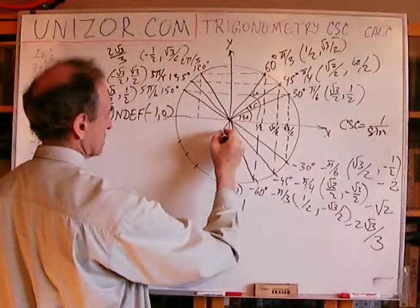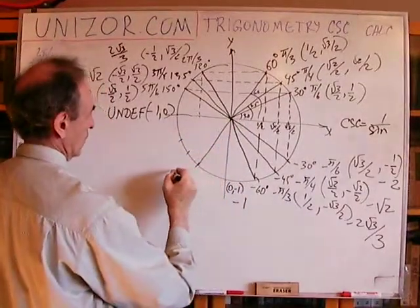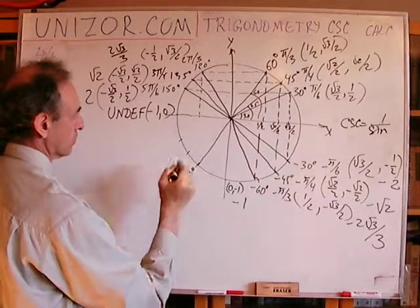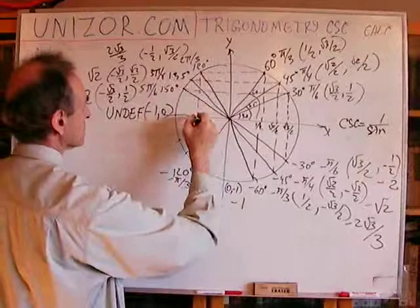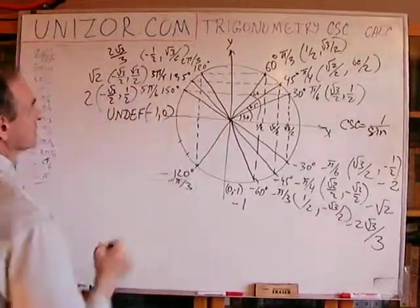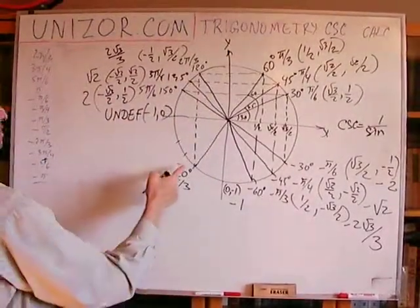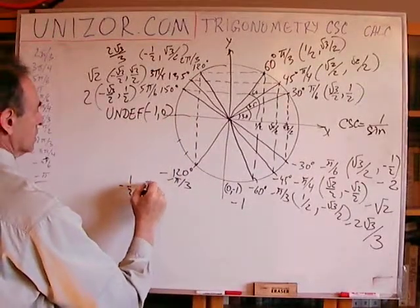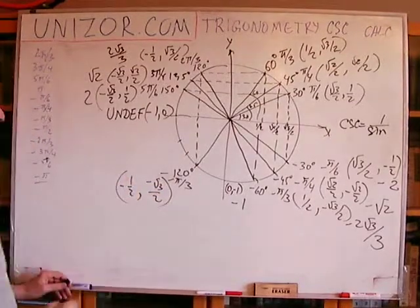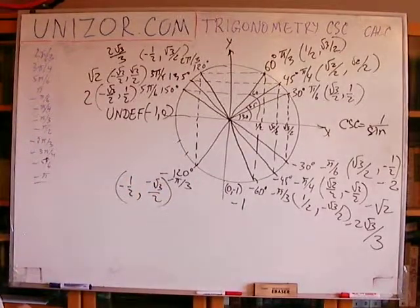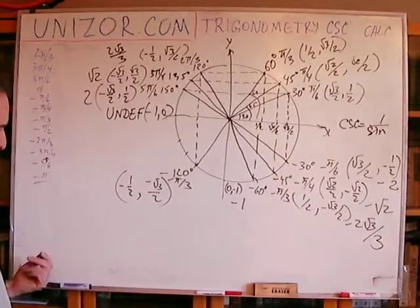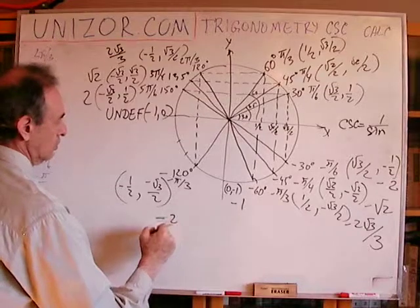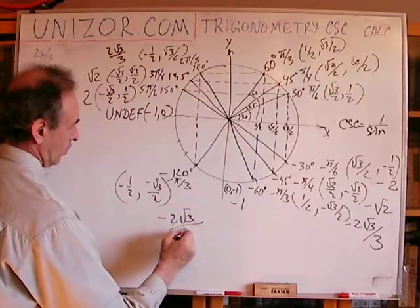Next is minus 120 degrees, which is minus two pi over three. The coordinates are obviously symmetrical with plus 120 degrees. I retain the abscissa and the ordinate changes sign. Therefore, the cosecant is minus two square root of three over three.